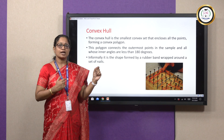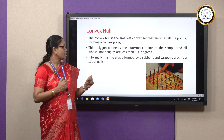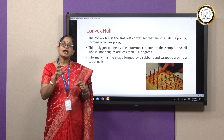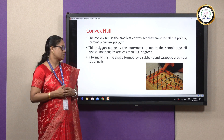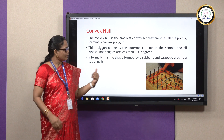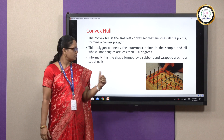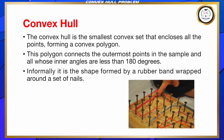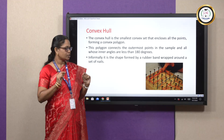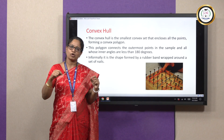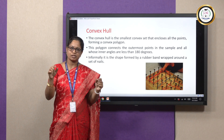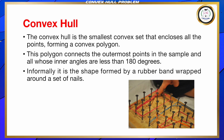This polygon connects the outermost points and the inner angles of the polygon are lesser than 180 degrees. Informally, it is assumed to be like the shape formed by a rubber band which is wrapped around a set of nails. You can see in the figure. Just think of wrapping a rubber band around a set of points or around a set of nails — the shape that is formed is called a convex polygon.